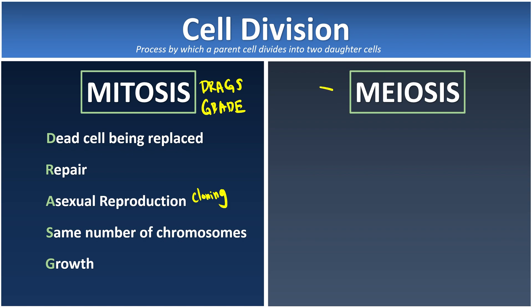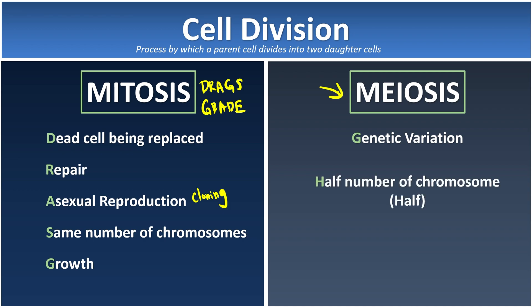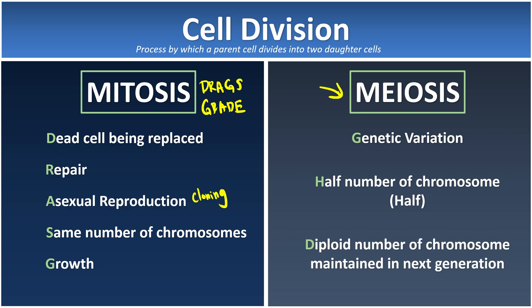For meiosis, it is very important for producing gametes, which ultimately produces genetic variations. This is why you look more handsome or prettier than your friends — why you and your friends look different. Remember it only produces half the number of chromosomes compared to the parent cell, because we pick the best ones carried by our sperm or ovum cells. This ensures the diploid number of chromosomes is maintained in the next generations.